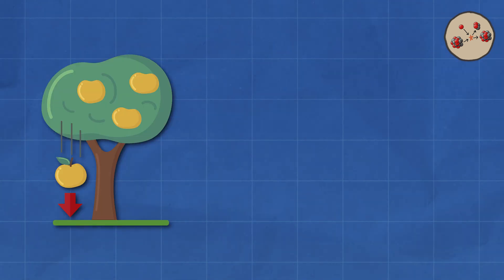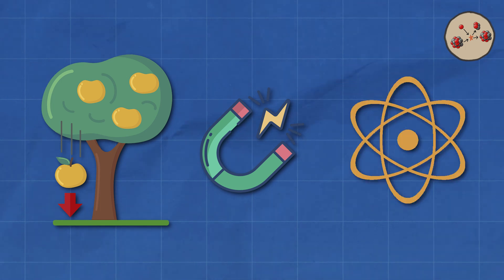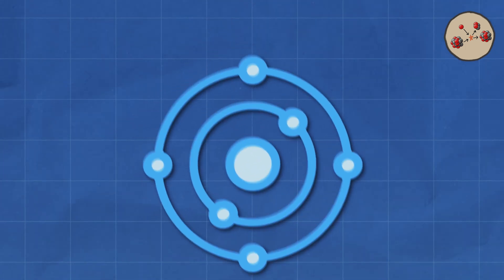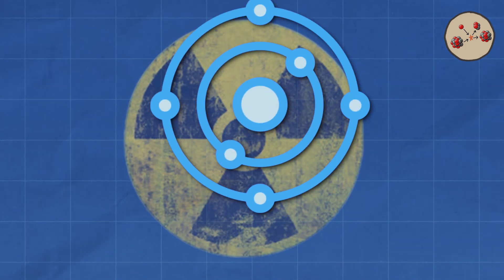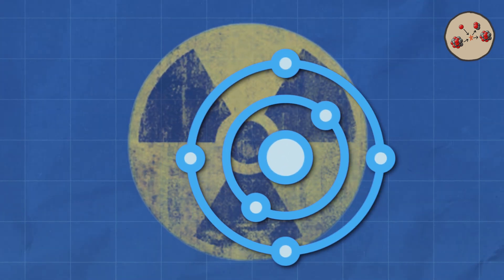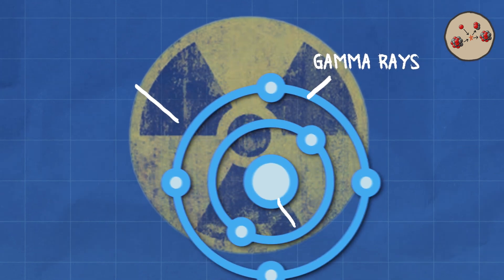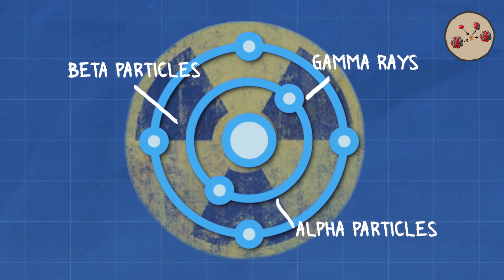The others being gravity, electromagnetism, and the weak nuclear force. Now, some nuclei are unstable and can't hold it together forever. These radioactive nuclei undergo radioactive decay, releasing energy and particles like gamma rays, alpha particles, or beta particles.